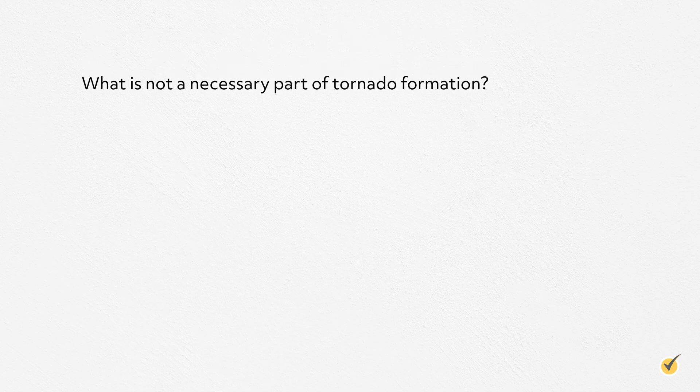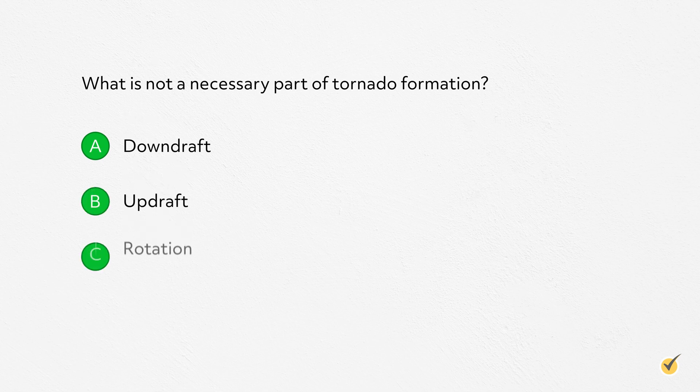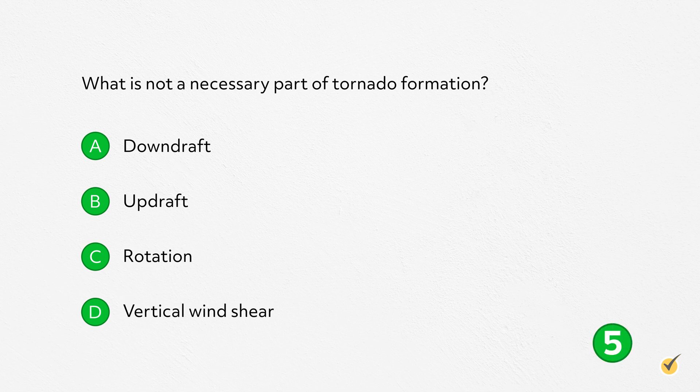Number two: what is not a necessary part of tornado formation? A) downdraft, B) updraft, C) rotation, or D) vertical wind shear? This was actually a trick question — they're all needed for tornado formation. Without any one of these components, you'll likely just have a nasty thunderstorm, but no tornado. I hope this review was helpful. Thanks for watching, and happy studying.